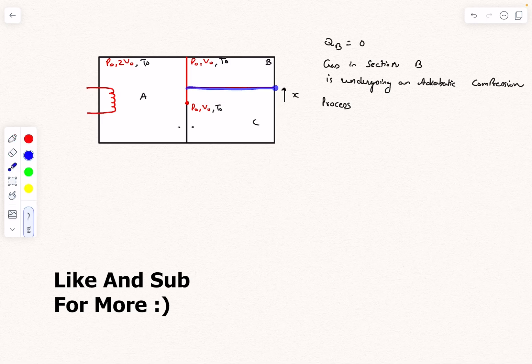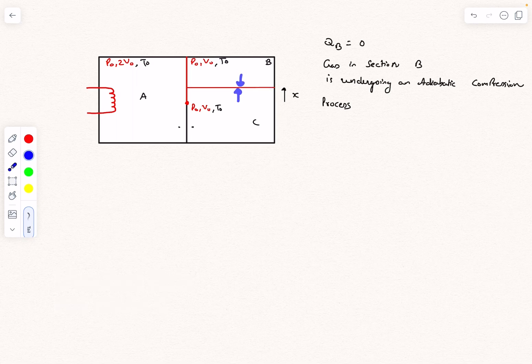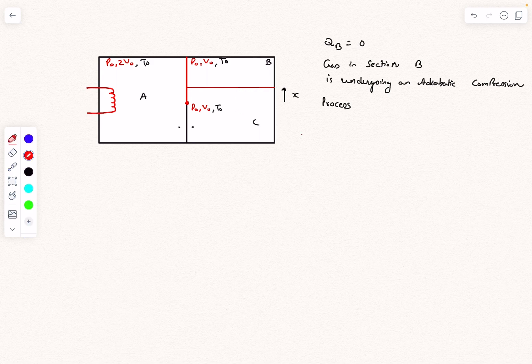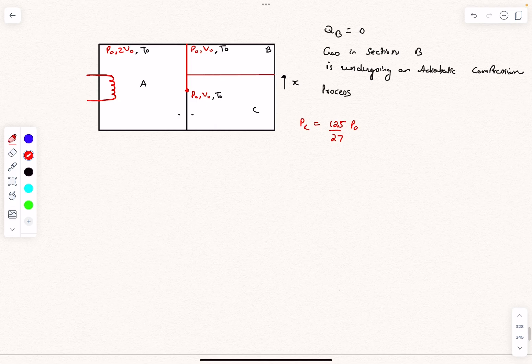This piston is actually massless, so if we want this to be in equilibrium and as there is no friction, the pressure of the gas above must be equal to the pressure of the gas below. The final pressure of gas in section C is given, so let's call it PC.